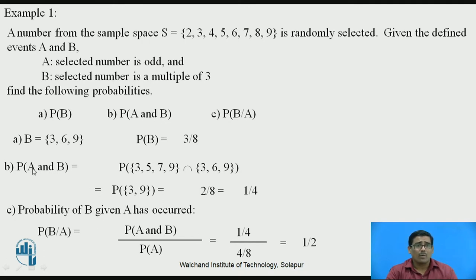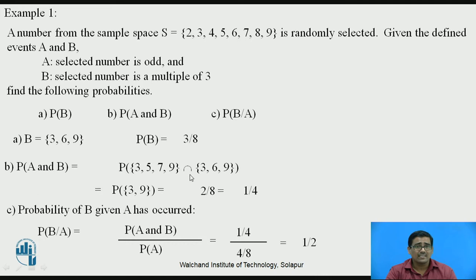We calculate the intersection between A and B. The common elements are: 3 is a common element in both, 6 is not in A, 9 is in both. So the intersection is {3, 9}. Therefore N = 2 and S = 8, giving probability of A and B equal to 2/8 = 1/4.